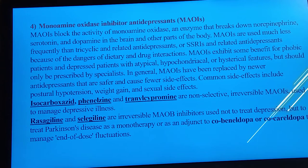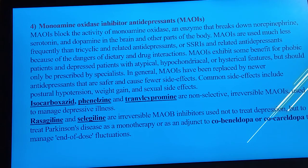MAOIs benefit patients with phobias, depression, hypochondriacal symptoms, frequent doubt about physical symptoms, and hysterical features. Side effects include postural hypotension, weight gain, and sexual side effects. Example drugs are isocarboxazid, phenelzine, and tranylcypromine. Other drugs include rasagiline and selegiline, also used to treat depression, and for monotherapy in Parkinson's disease — using co-beneldopa and co-careldopa for end-of-dose fluctuations.